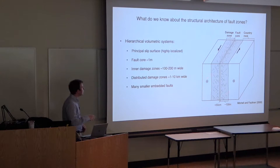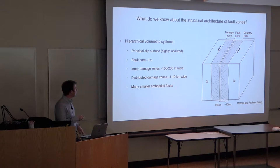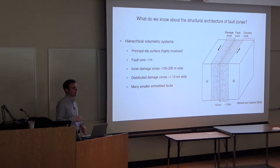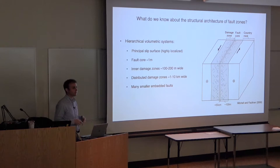This cartoon from Mitchell and Faulkner shows the basic structure: you have a principal slip surface that's highly localized - on the order of centimeters. Surrounding this is the fault core on the order of meters, which can contain gouges. Then there are inner damage zones on the order of a few hundred meters wide, where rock damage density decreases exponentially away from the fault core. We also see evidence for distributed damage zones on the order of kilometers scale, which can persist to significant depth.